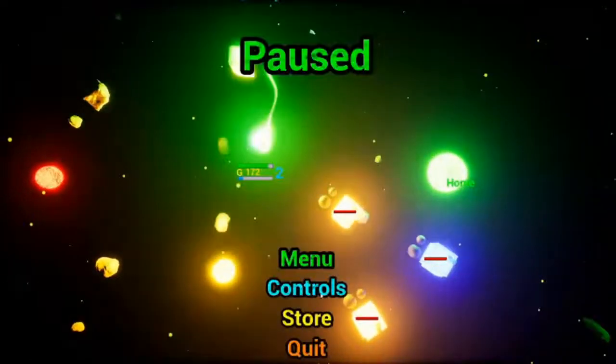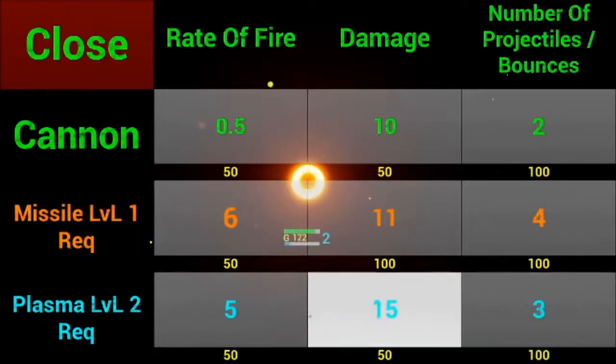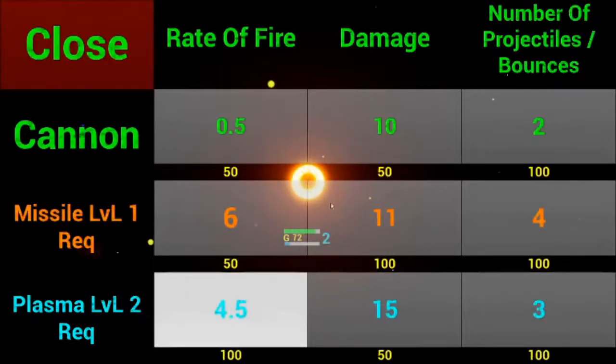The enemies can outrun you. But they have avoidance for each other. So if you maneuver around them correctly you can keep from getting hit. But it takes a little bit of practice.